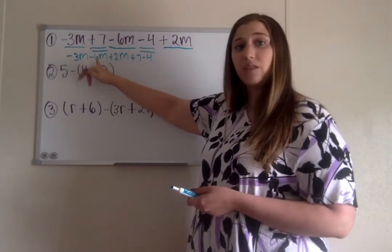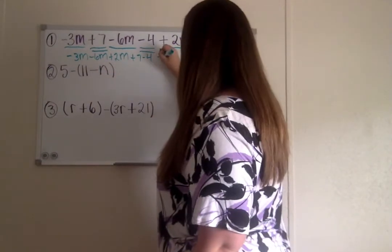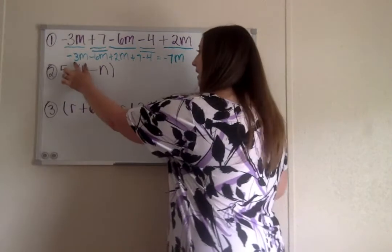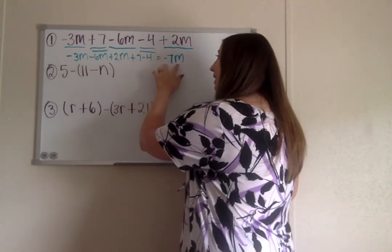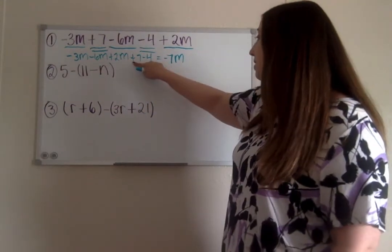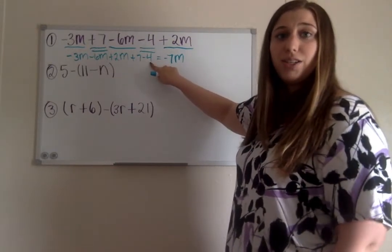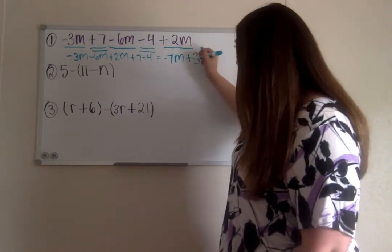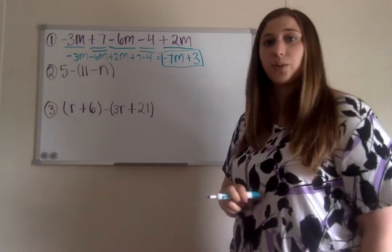So negative 3m minus 6m would give us negative 9m, but then we still have to add 2m, so that gives us negative 7m. Again, negative 3 minus 6 gives us negative 9, plus 2 gives us negative 7m. Then our other two like terms we had a positive 7 and then a minus 4. Again, 7 minus 4 is 3. Since it's a positive 3 we put plus 3. So we get negative 7m plus 3 as our answer for the first one.